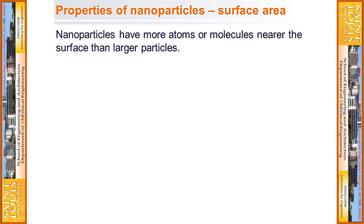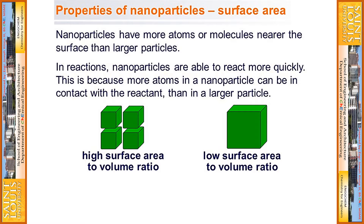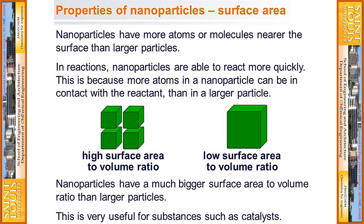One important property of nanoparticles is the surface area. Nanoparticles have more atoms or molecules nearer the surface than larger particles. In reactions, nanoparticles are able to react more quickly because more atoms in a nanoparticle can be in contact with the reactant than in a larger particle. Nanoparticles have a much bigger surface area to volume ratio than larger particles — this is very useful for substances such as catalysts.